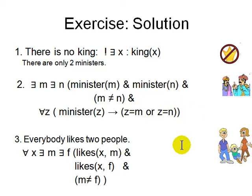So you can try writing this in first order logic. There is no king. There are only two ministers. Everybody likes two people, maybe your parents. Two people like everyone, which is different from number three. Two people don't like each other.